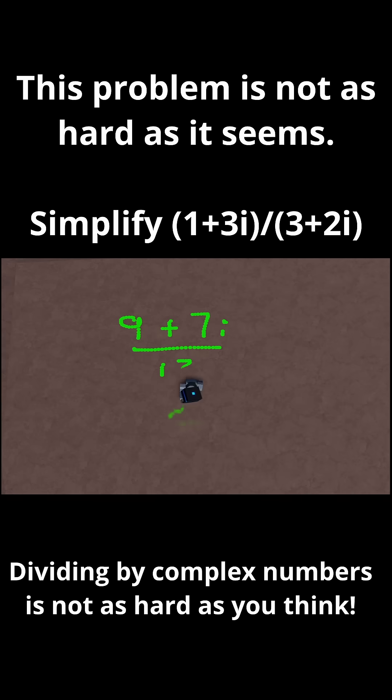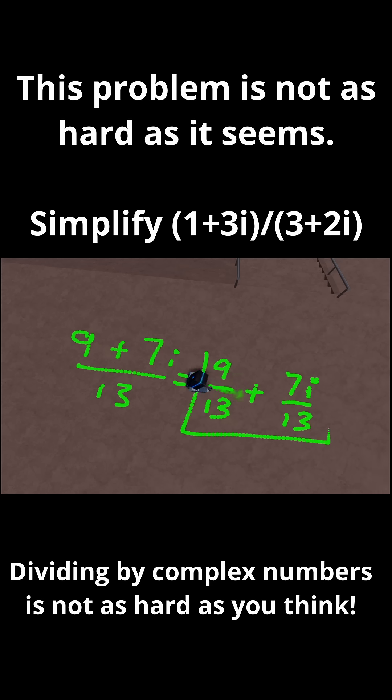So my final expression is 9 plus 7i divided by 13. And I can break this down into 9 divided by 13 plus 7i divided by 13. And just like that, we've managed to divide complex numbers.